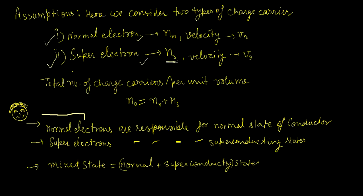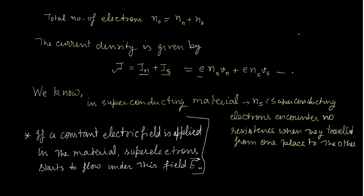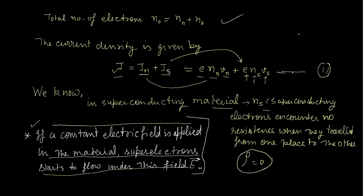We assume two types of electrons inside the superconductor: number one, normal electrons — the electrons that flow in a normal conductor, with velocity v_n; and number two, super electrons, with velocity v_s. The total number of charge carriers per unit volume is n naught, which equals n_n plus n_s. The current densities are J_n equals e times n_n times v_n, and J_s equals e times n_s times v_s.